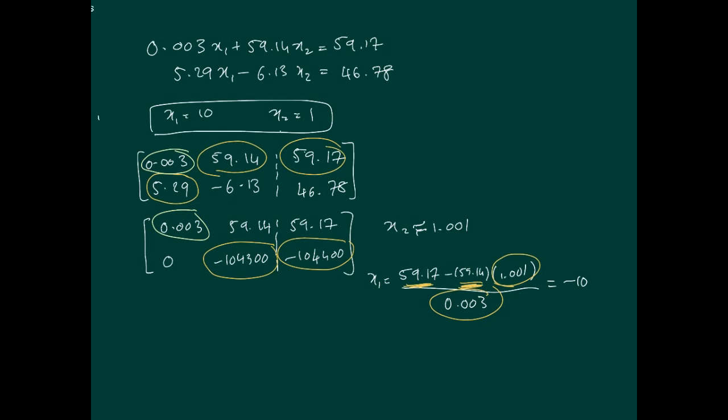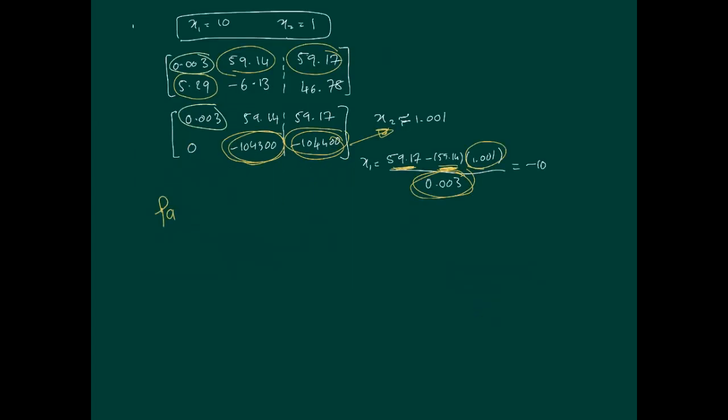The presence of the 0.001 is magnified by the 0.003, which is causing these large numbers to appear and the error to happen. We end up with absolutely the wrong answer. The problem in this case is the pivot element of 0.003. Here we introduce the idea of partial pivoting.